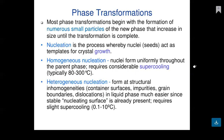Nucleation is the process whereby nuclei or seeds act as a template for crystal growth. Afterward, the crystal size increases. In homogeneous nucleation, nuclei form uniformly throughout the parent phase, which requires considerable supercooling — typically 80 to 300 degrees Celsius.